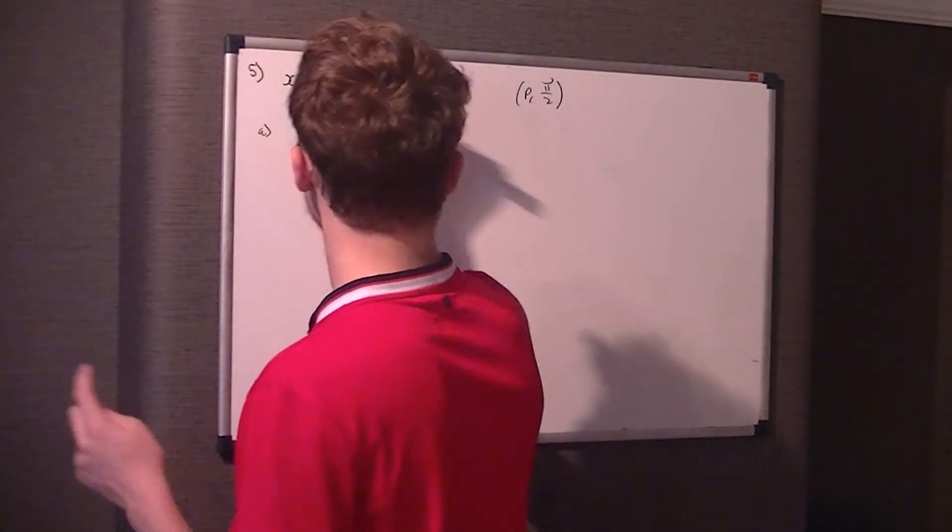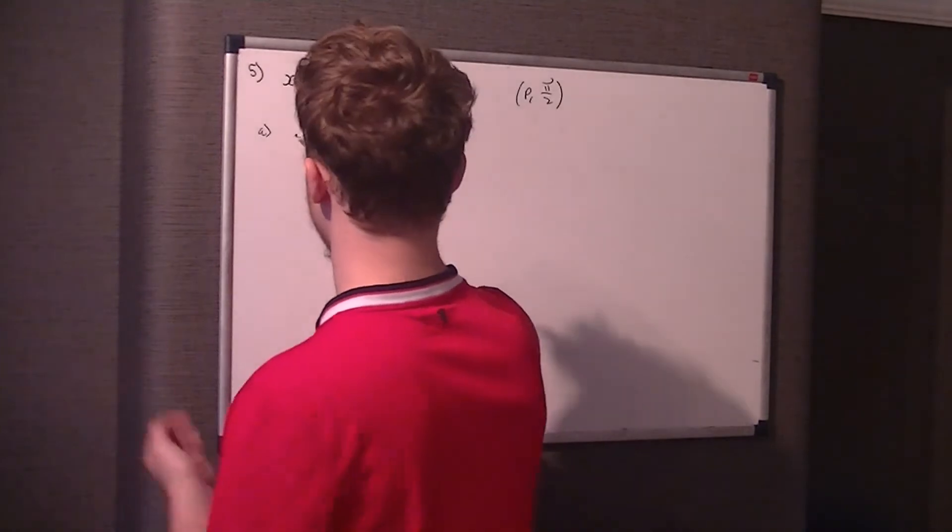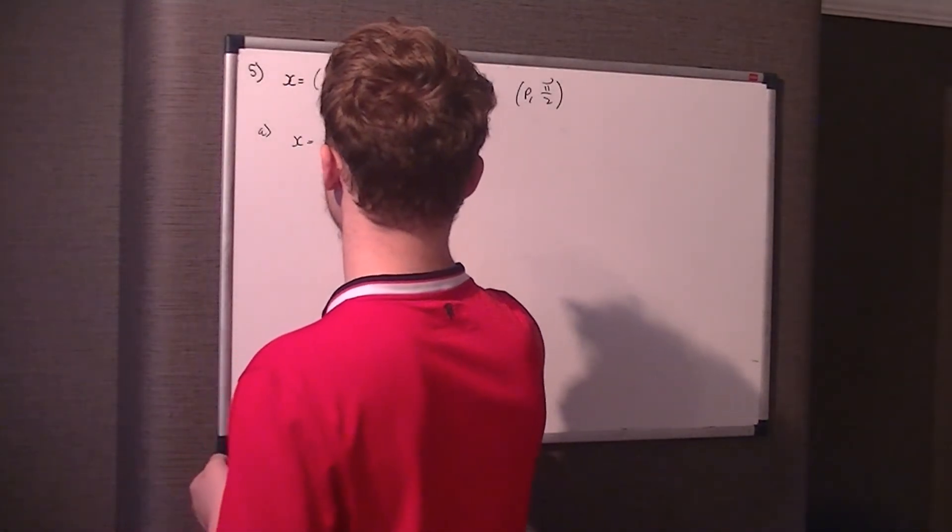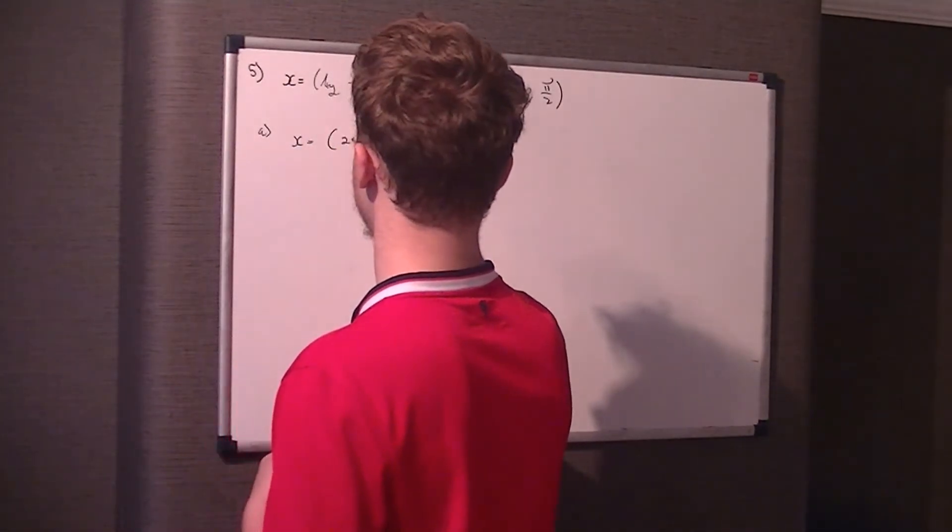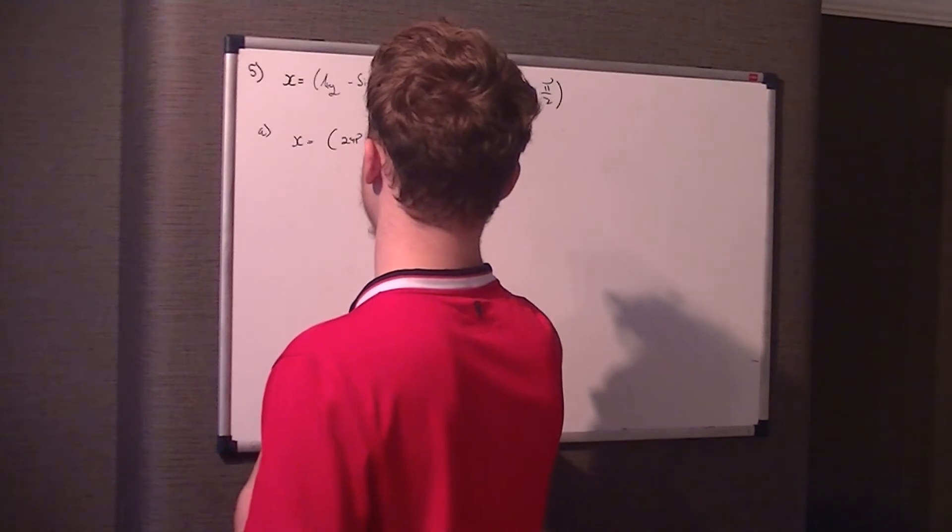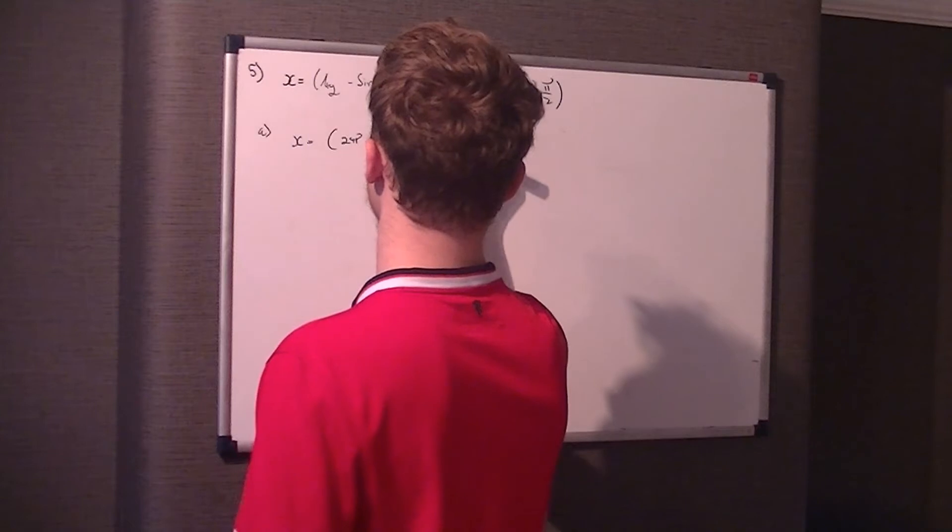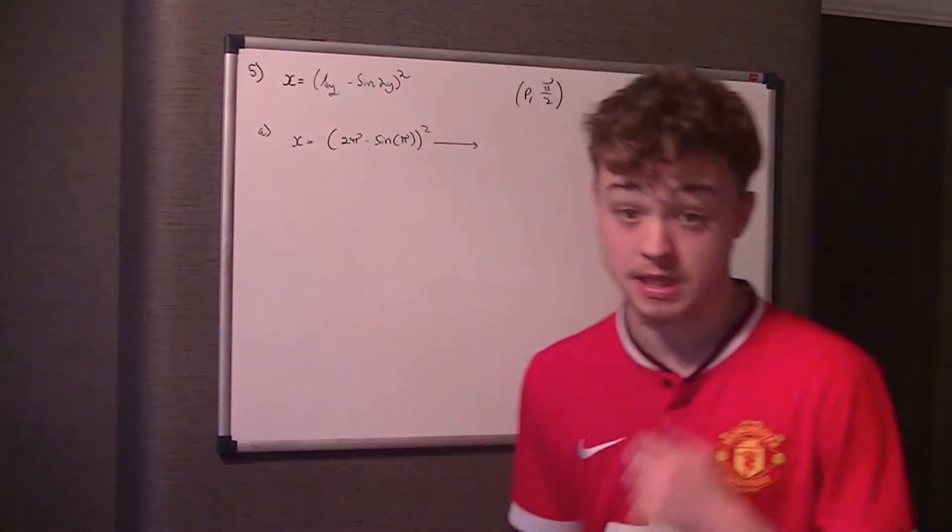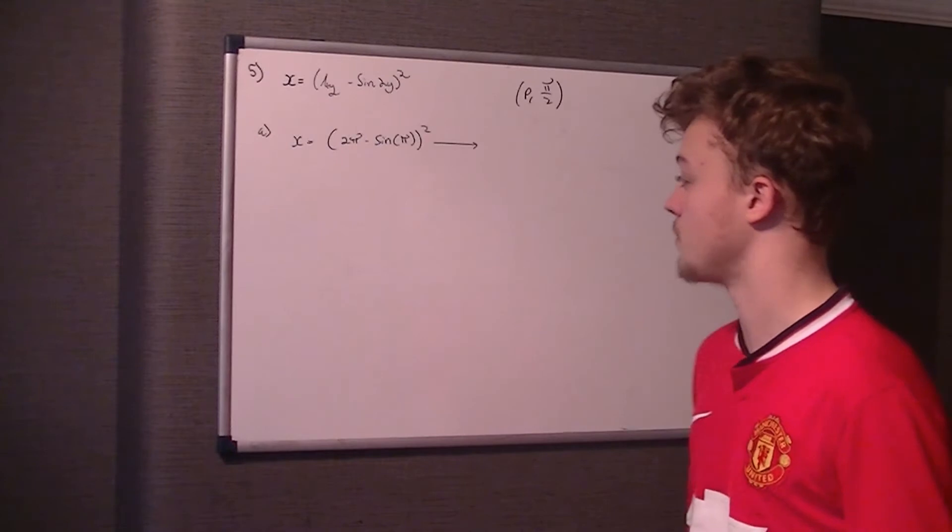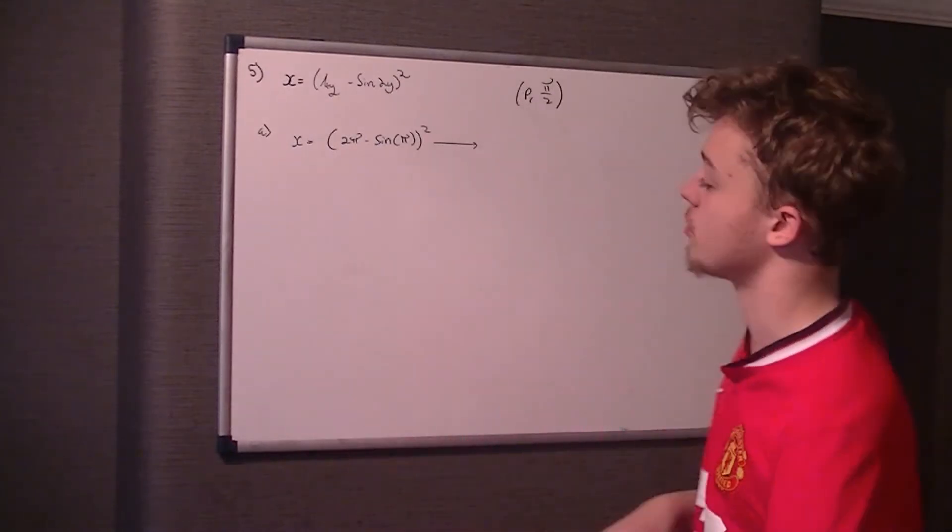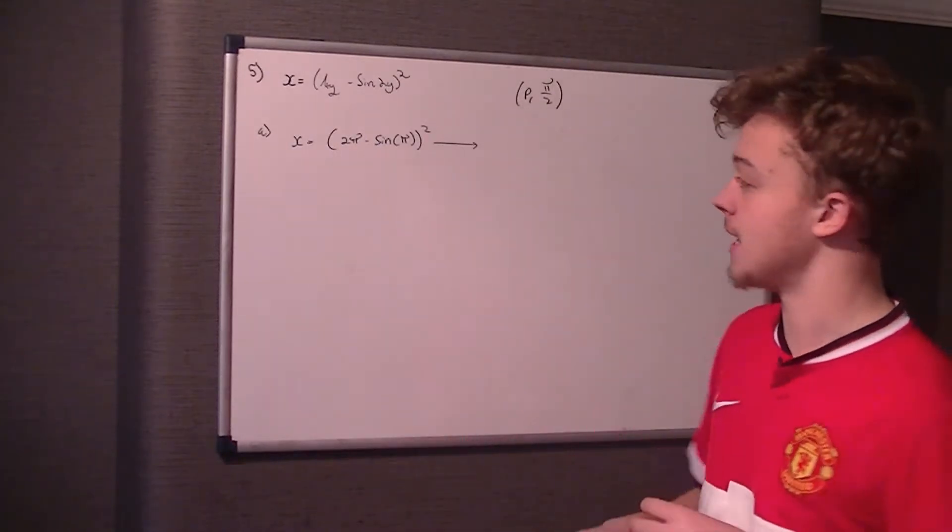So all we do is simply sub in pi by 2 as y to get x. So x equals 4y, which is just 2pi, take sine 2y, which is sine pi, all squared. Now, you should know, when you tap sine pi into your calculator, it's the same as typing sine 90 if you're using degrees. And obviously, that is zero.